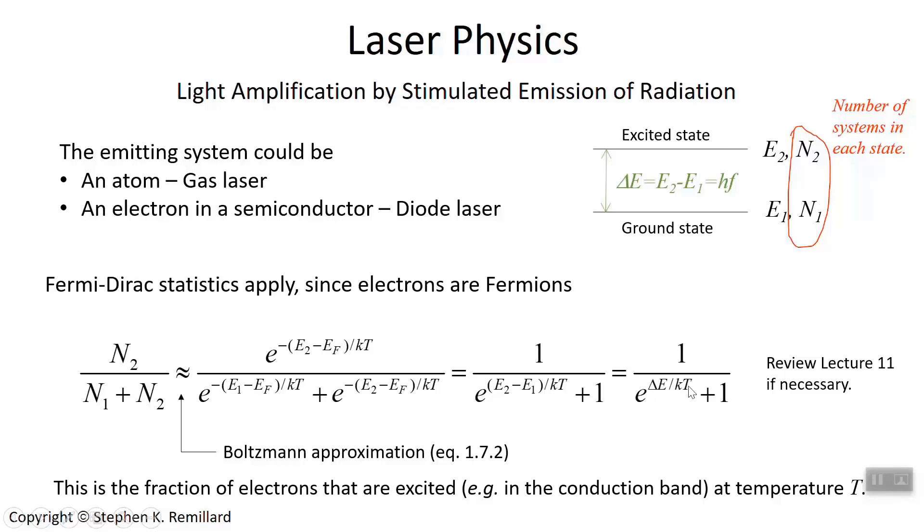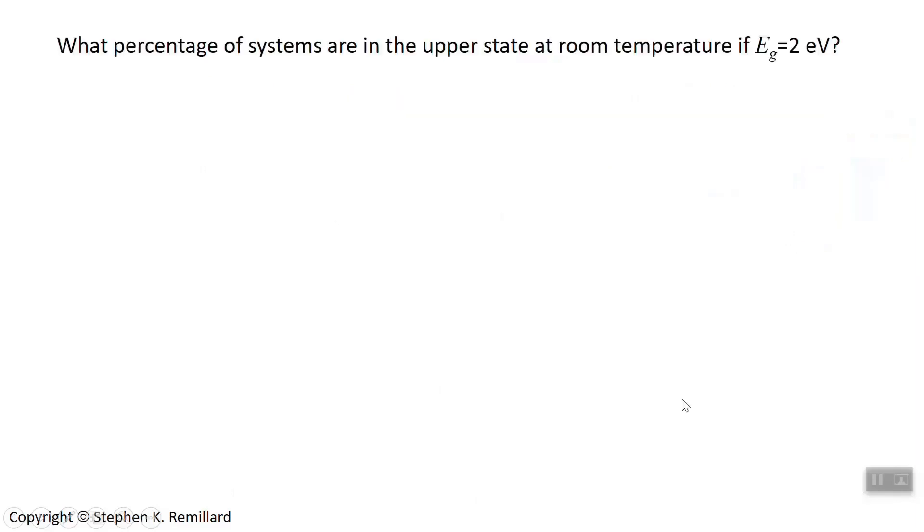This is temperature dependent. If we go to zero temperature, you're not going to have any electrons up there in the conduction band. In fact, let's take a little look at that. Let's just play with this expression a little bit. Let's ask a simple question: What percentage of systems, that is in this case a diode electrons, are in the upper state at room temperature? Suppose the gap energy is 2 eV, so then you use 2 eV for that E2 minus E1, and you calculate 4 times 10^-34 is that ratio, which I will interpret as 4 times 10^-32 percent, so none. So at room temperature, with the 2 eV band gap, you simply don't have electrons in the conduction band.